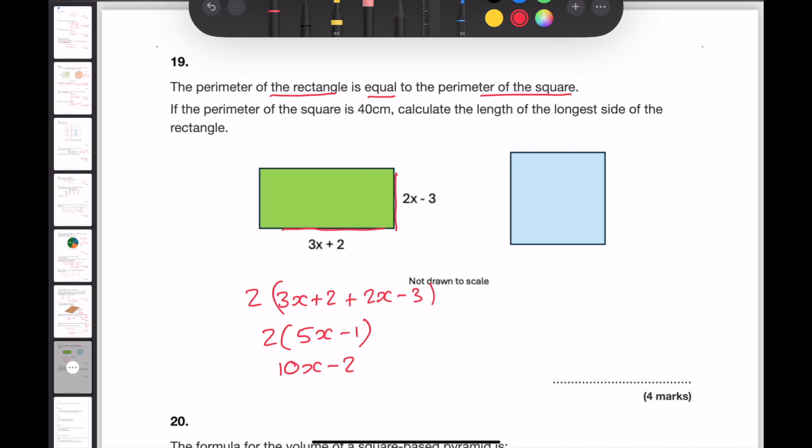Since the two perimeters were identical, this means that the perimeter of the rectangle 10x minus 2 is now going to equal 40. Solving this equation I can find out what x is equal to. Adding 2 to both sides would give me 10x is equal to 42 and x is equal to 4.2.